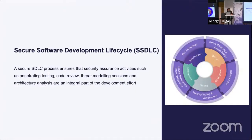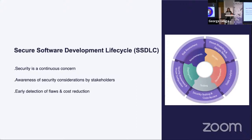Let's talk about the Secure Software Development Lifecycle. Now that we're aware of our potential attack surface, we need to think about how to secure our SDLC and all the entry points where we can implement guardrails. The SSDLC process ensures security assurance activities such as pen testing, code review, threat modeling sessions, and architecture reviews. This applies both for companies and for open source projects. Security is a continuous concern for everyone — maintainers, contributors, and users — and early detection of flaws reduces cost.